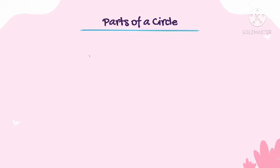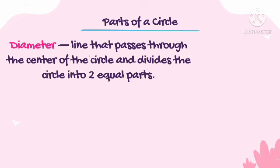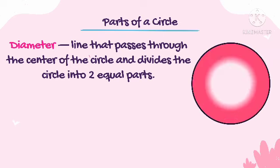From our previous lessons, we have already named the different terms relating to the circle. So now let's have a brief review about the different parts of a circle. We have the diameter — the longest chord — and this is the line that passes through the center of the circle and divides the circle into two equal parts. The diameter is the line in the middle that passes through the center.